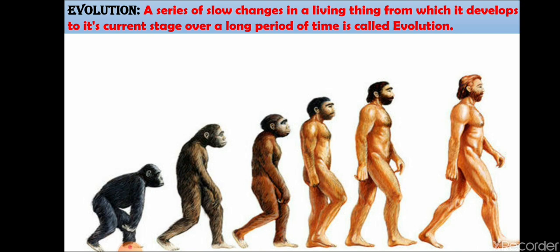Even today some slow changes are taking place among humans, and slowly it will be visible after 2 million years. So, evolution is a series of slow changes — or we can say it is the gradual process of change and development of something.